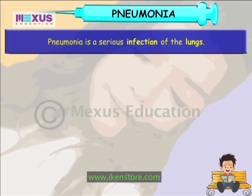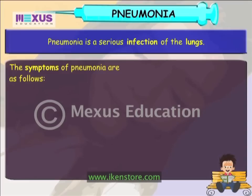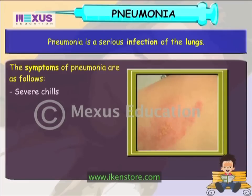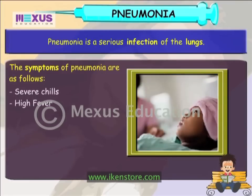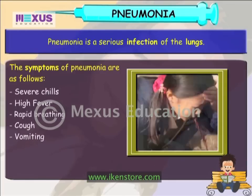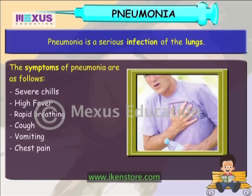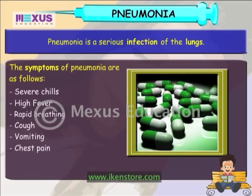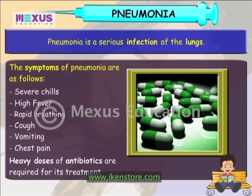Pneumonia is a serious infection of the lungs. The symptoms are severe chills, high fever, rapid breathing, cough, vomiting and chest pain. Heavy doses of antibiotics are required for its treatment.